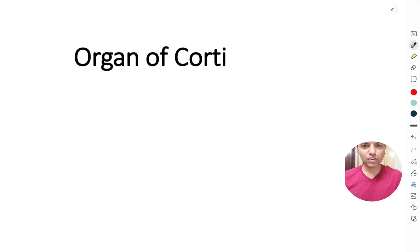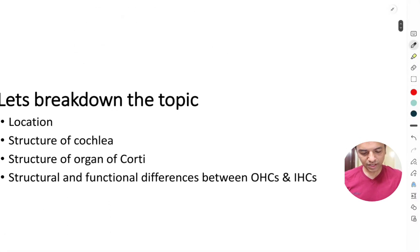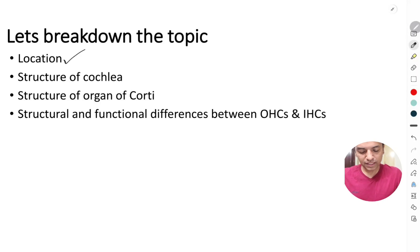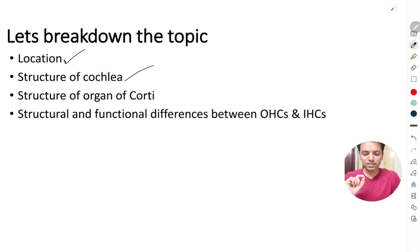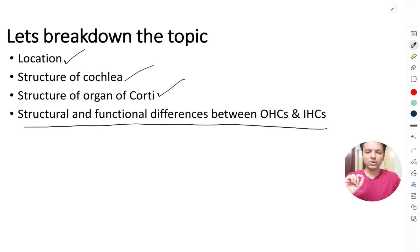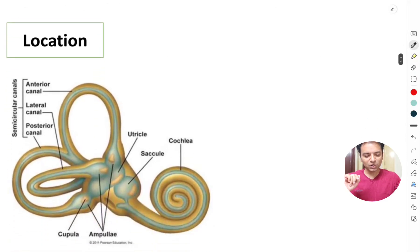In this video let's understand the organ of Corti. To make it easy, we'll break down the topic into key parts: first the location, then the structure of the cochlea — which is very important to understand the organ of Corti — and finally the structural and functional differences between the outer hair cells and the inner hair cells, which are the receptor cells present in the organ of Corti.